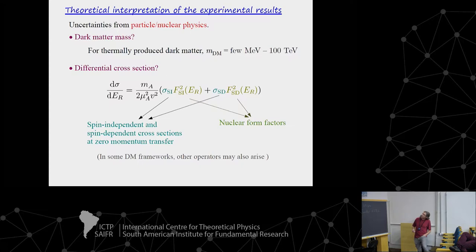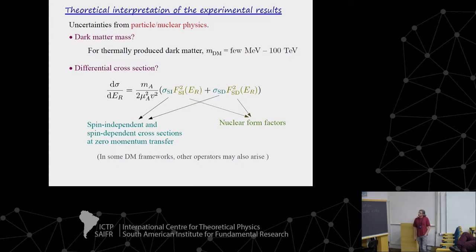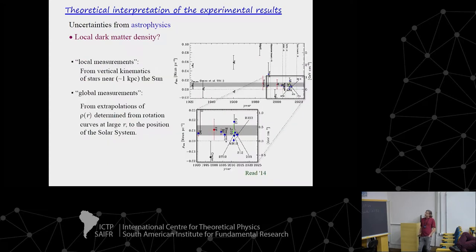Concerning particle physics uncertainties: for the dark matter mass we have no idea — it could be anything between 10^{-20} eV or several thousand solar masses. But if dark matter is made of WIMPs, we expect the mass to be between a few MeV and 100 GeV. For the differential cross-section, under well-motivated assumptions it can be cast as two types of interactions: spin-independent, proportional to the charge of the nucleus, and spin-dependent, proportional to the spin of the nucleus, with nuclear form factors. Here I focus on the astrophysical uncertainties, which are in my opinion much more severe and difficult to tackle.